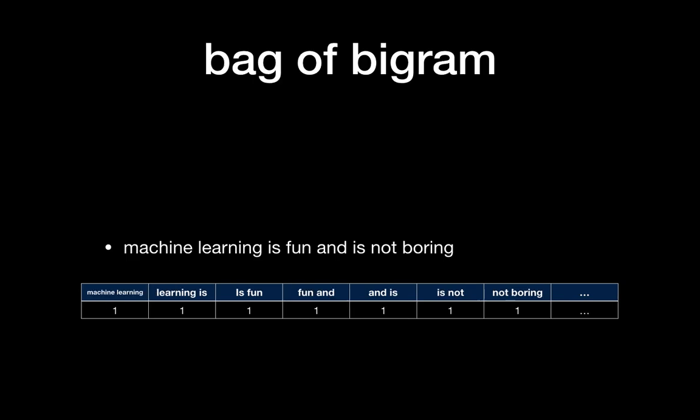So if you use bag of bigrams here, then you can catch there is one 'machine learning' and 'not' is coming before 'boring.' Here, 'machine learning' is one term and 'not boring' is a token. Now we know that 'not' is coming before 'boring,' not before 'fun.'